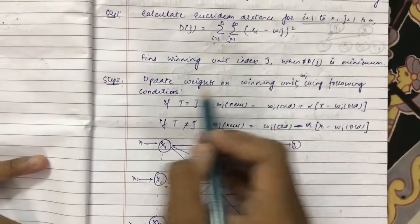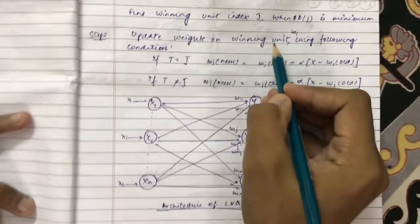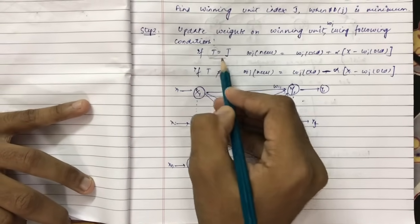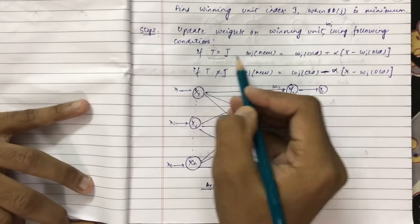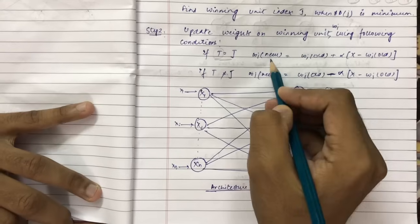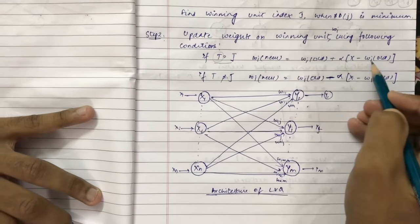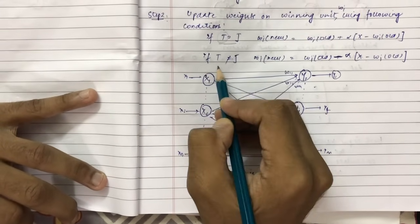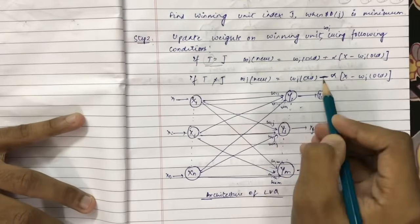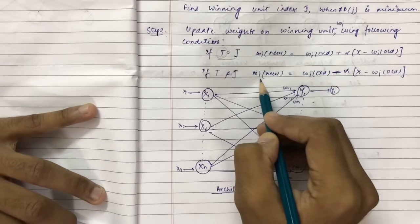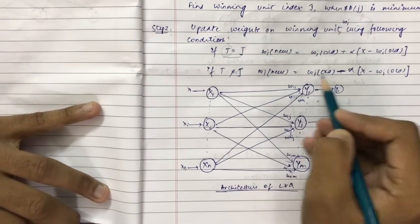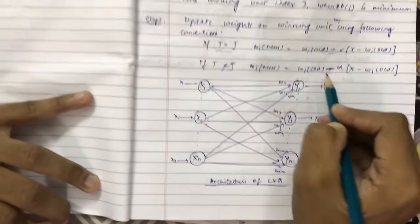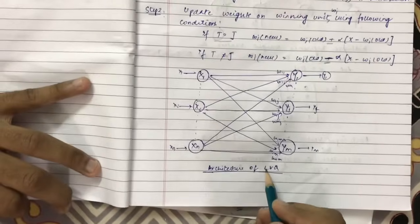Find the winning unit index j where d(j) is minimum. Now update the weight on the winning unit using the following conditions: if the target value t equals the winning cluster index j, apply weight update: w_i(new) = w_i(old) + alpha * (x - w_i(old)). If the target value is not equal to the winning cluster index, apply: w_i(new) = w_i(old) - alpha * (x - w_i(old)). So here it is plus, and here it is minus.